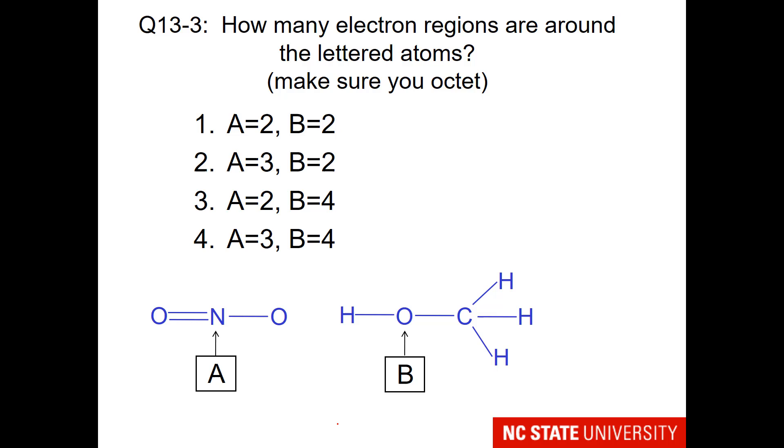Now for those of you who are going to organic chemistry, your instructor may not have enough time to add the electron regions around all the atoms. So this question asks how many electron regions are around the lettered atoms, but has the hint to make sure you octet. So I'll help you with the first one. Nitrogen has three bonds. That means it needs one lone pair. So focus in on that nitrogen and name the things attached to it. Double bond, lone pair, single bond. The number of electron regions is the number of items one names.